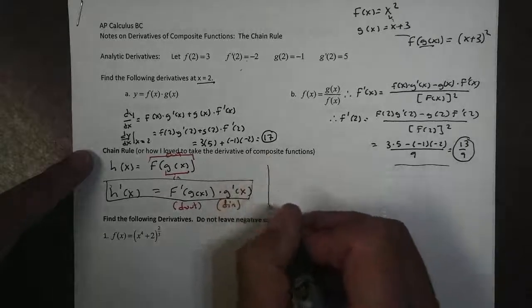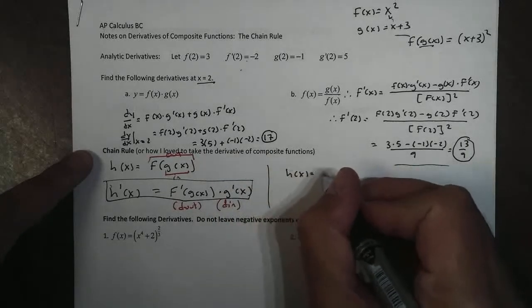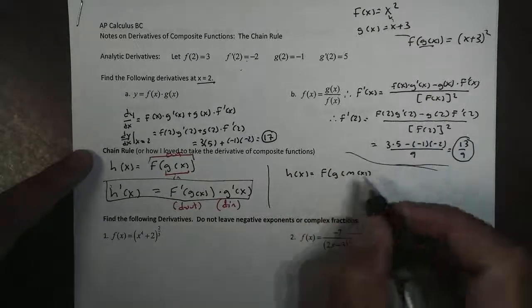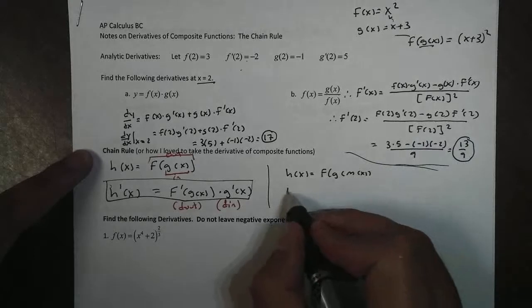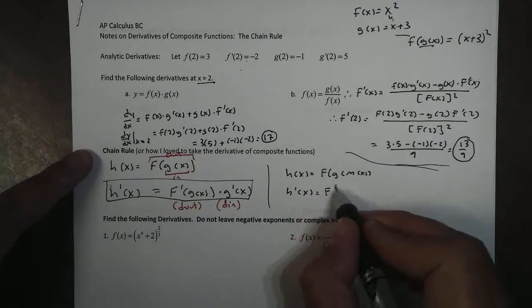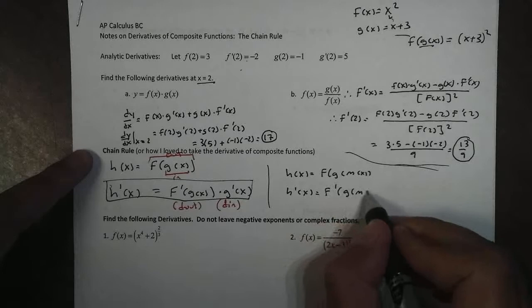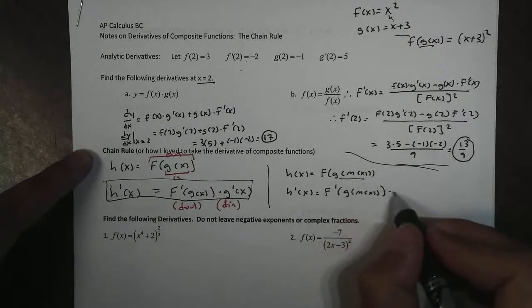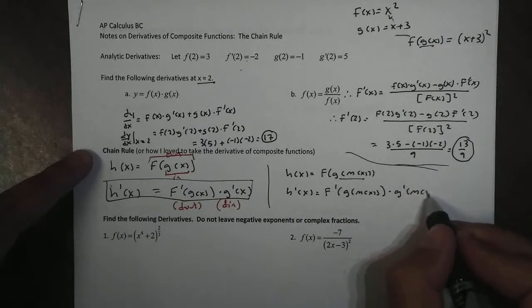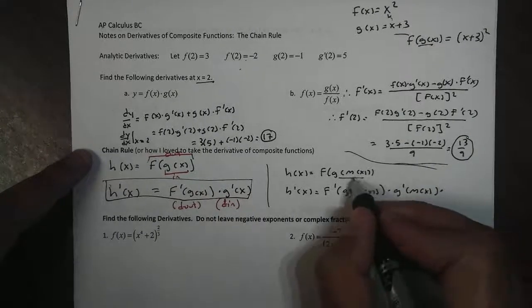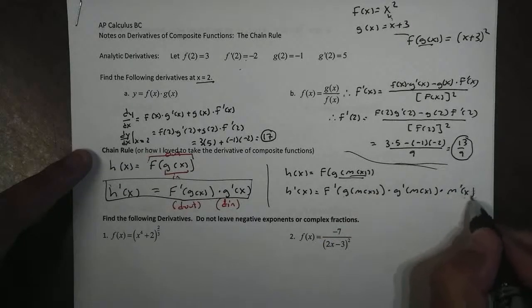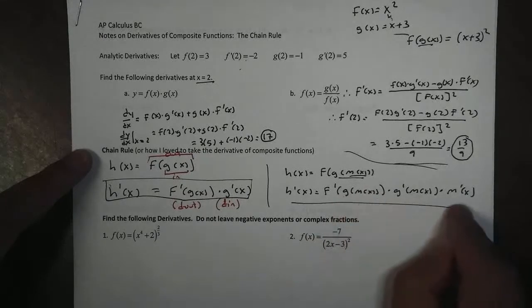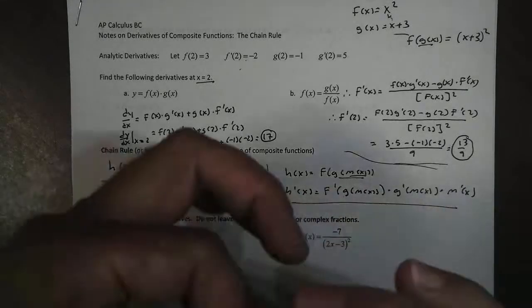And we can do this with multiple of them. Let's say h(x) was the following: f(g(m(x))). Well, how would we take this function's derivative? Well, same thing. We start with the f, f'(g(m(x))), times go to the next inside, which is our g(x). So g'(m(x)), and then I just have another inside, m'(x). And now you can see why we call it a chain rule, because we just keep on adding an extra layer of it. Like a chain, like a chain link fence.